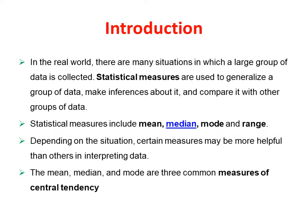Now we are going to start with the median. Depending on the situation, certain measures may be more helpful than others in interpreting data. This is also a measure of central tendency. We are going to start with the mean — the arithmetic mean, the geometric mean, and the harmonic mean. These three types of mean, along with the median and mode, are measures of central tendency.